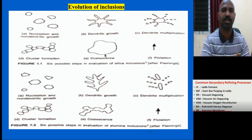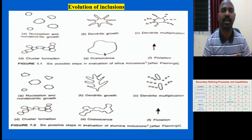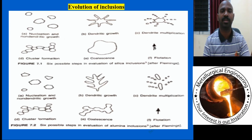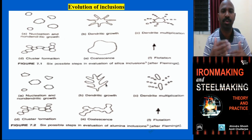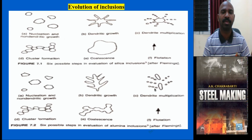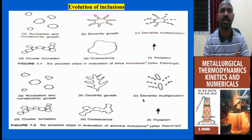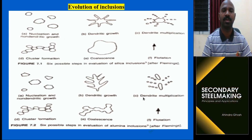Similarly, for alumina inclusions, the process is observed at the molecular and microstructure stage. In the case of alumina, the formation mechanism — including multiplication and coalescence — is quite different compared to silica, but the initial stages are the same. In both cases, by allowing inclusions to float up, you can reduce the inclusion ratio and finally obtain inclusion-free steel.